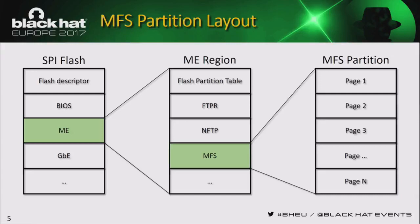On modern computers there is an SPI Flash chip — Serial Programming Interface. That flash chip contains several pieces of software: code for BIOS, code for Management Engine, some data for Gigabit Ethernet, and so on. Within the Management Engine region there is a kind of partition table describing what's inside the ME region. One of these partitions is called MFS — which I believe stands for ME File System. MFS partition appears to be a set of pages.